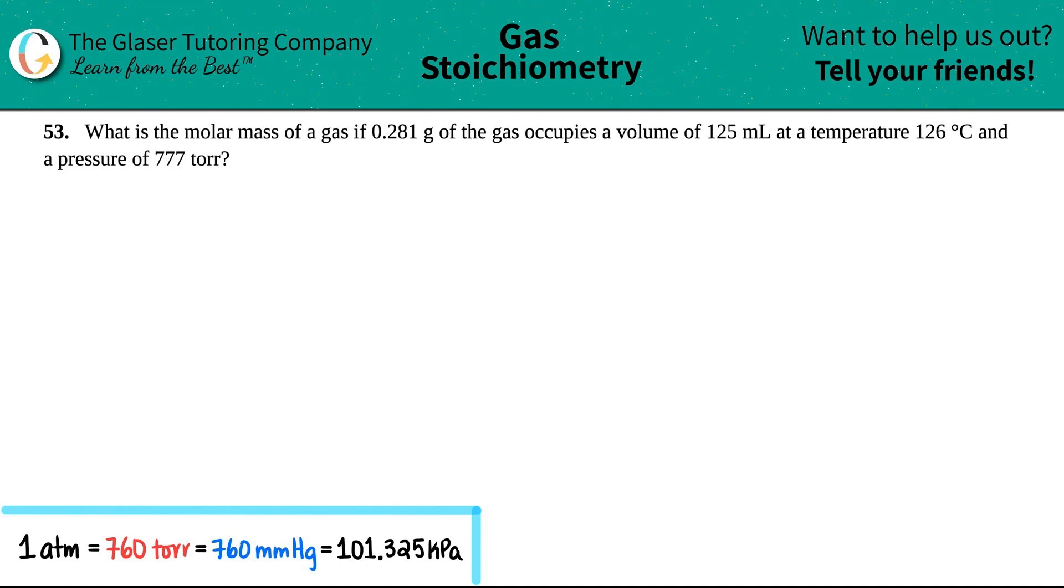Number 53, what is the molar mass of a gas if 0.281 grams of the gas occupies a volume of 125 milliliters at a temperature of 126 degrees Celsius and a pressure of 777 torr?